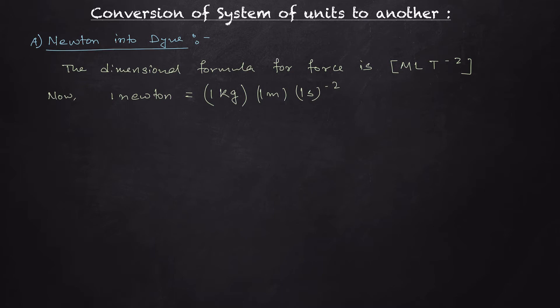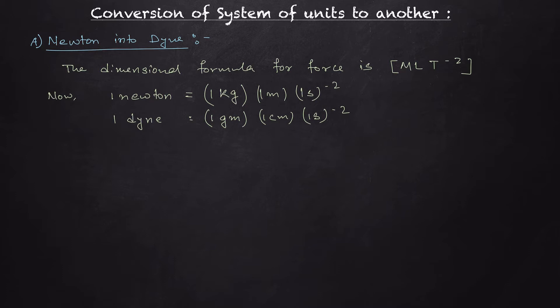In the MKS unit, M is mass in kg, so we write one kg; L is length, so one meter; and T is one second to the power minus two. Similarly, one dyne equals one gram × one centimeter × one second to the power minus two. So M is one gram, L is one centimeter, and T is one second.